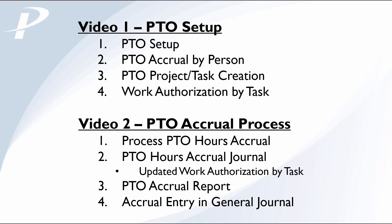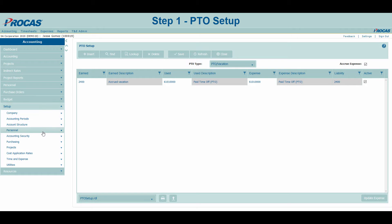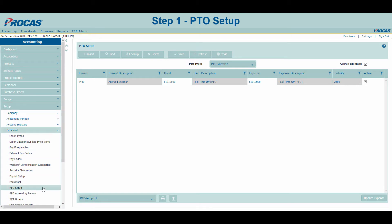Let's jump into the system to begin setting up our paid time off and sick leave information. Step 1 – PTO Setup is accessed under the Setup Menu and Personnel Submenu. This form is used to set up the default accounts for the automated PTO accrual process. Because this is the foundation, it should only be edited during its implementation.